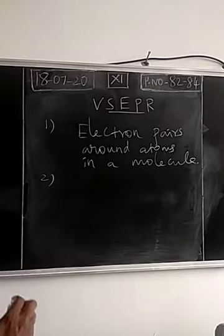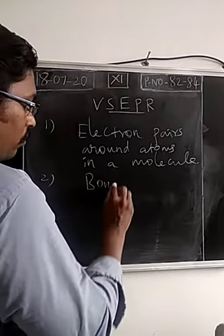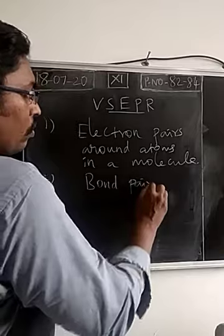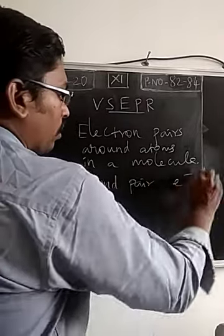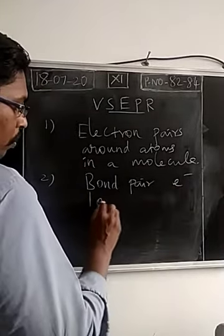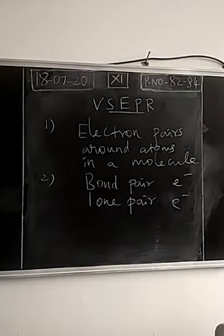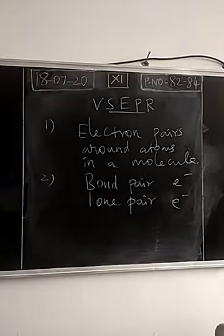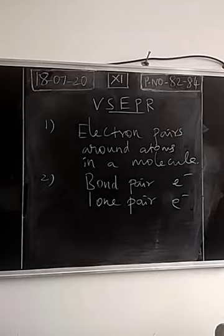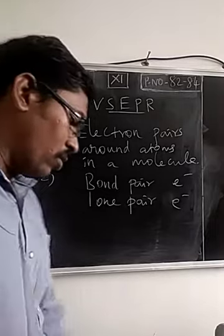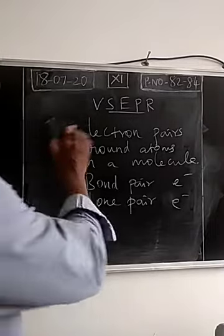The second point: the electron pairs around an atom are of two types — one is bond pair, and another one is lone pair. The electron pairs are of two types in a covalent molecule: one will be present as a bonded pair, and another will be present as a lone pair of electrons.